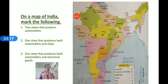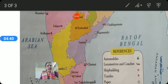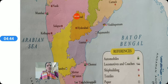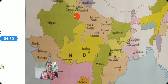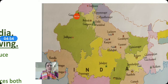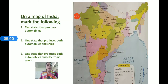This map is on page 130 and your exercise is on page number 132. On the map of India, mark the following. First: two states that produce automobiles. Look at the symbol of automobiles — it is a car icon. Automobile production is found in Chennai, Kolkata, Gurgaon, Faridabad, and Delhi. You have to mark two of these states.